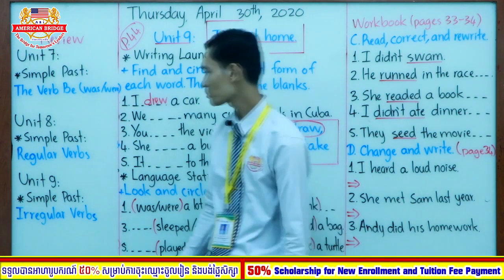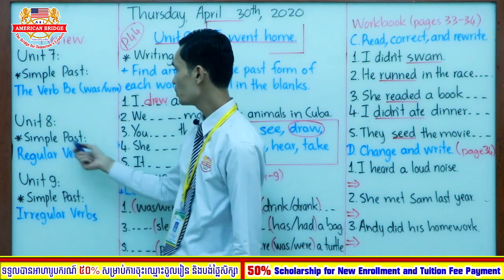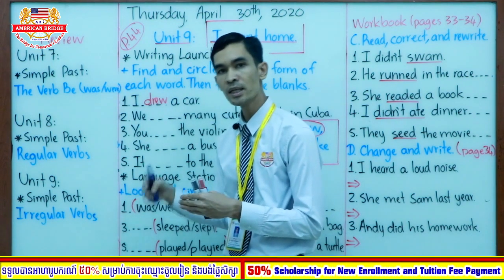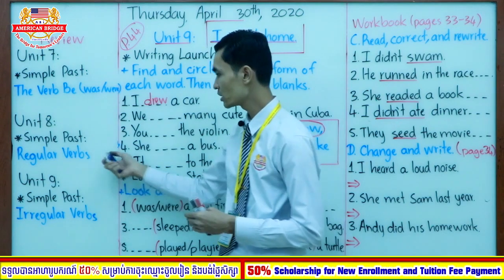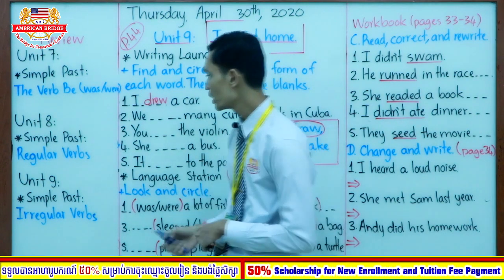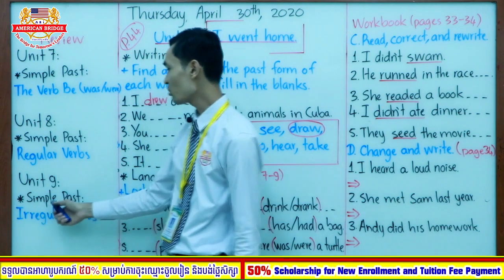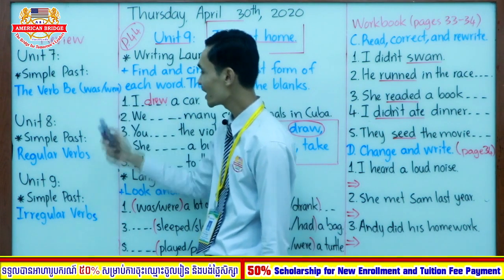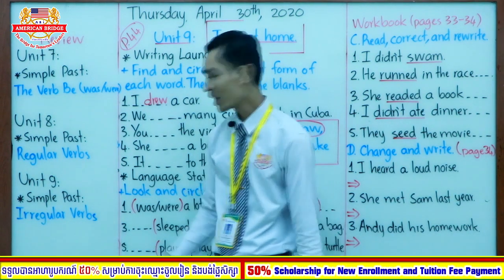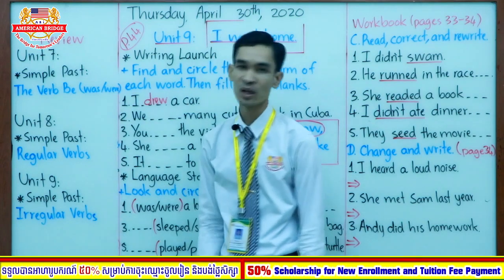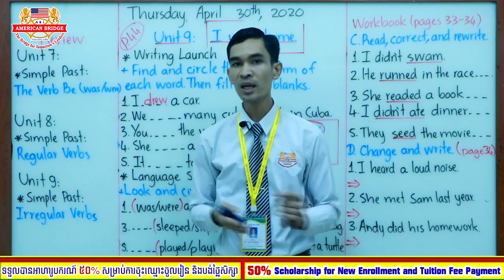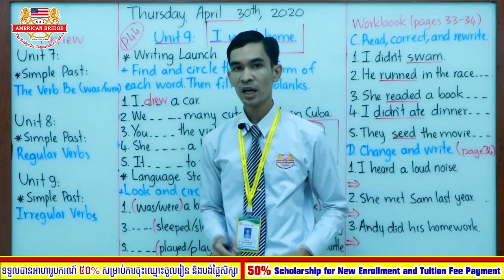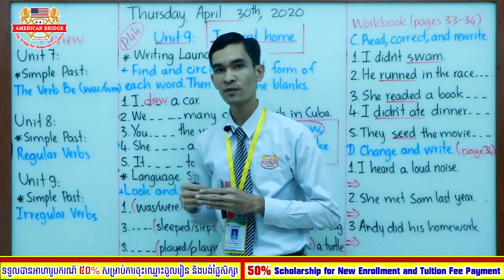So in simple past regular verbs, you need to know how to add -ed, -d, and -ied. You need to remember this well. How about unit 9? We also studied simple past — three units of simple past: unit 7, unit 8, and unit 9. But in unit 9 you study irregular verbs. As we learned, with irregular verbs you change the verb to a different form.